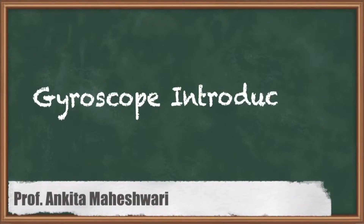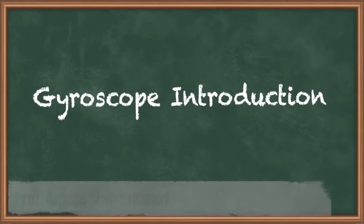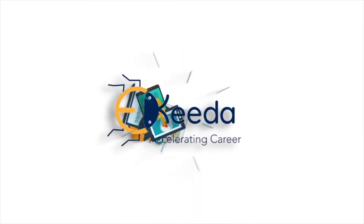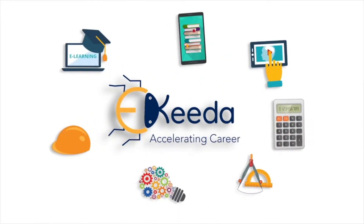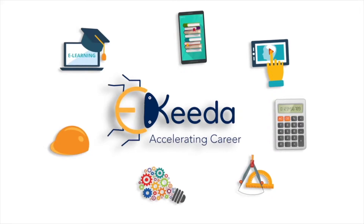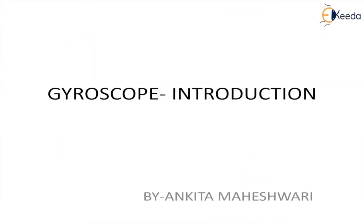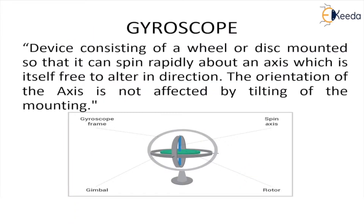Hello everyone. In this video we will discuss about gyroscopes. A gyroscope is a device which is used for maintaining and measuring angular velocity and orientation.